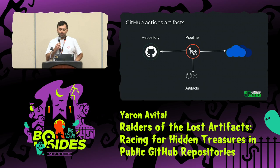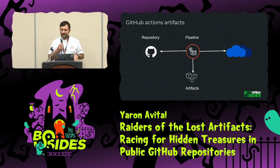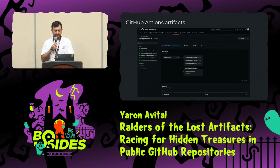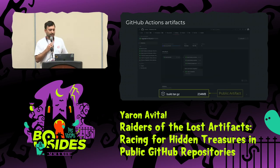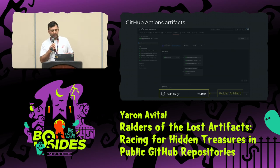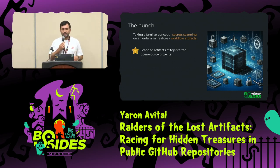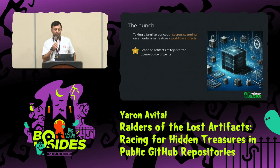GitHub Actions allows you to upload artifacts as part of your pipeline. These artifacts are not packages — they're not the formal binaries. They are mainly designed to share data between jobs, or for developers to debug the pipeline afterwards. I had this hunch of doing secret scanning on these artifacts because they are compiled in a very sensitive environment, and I hadn't heard any chatter about it. So I decided to take the most popular starred repositories on GitHub and try to scan them for secrets.